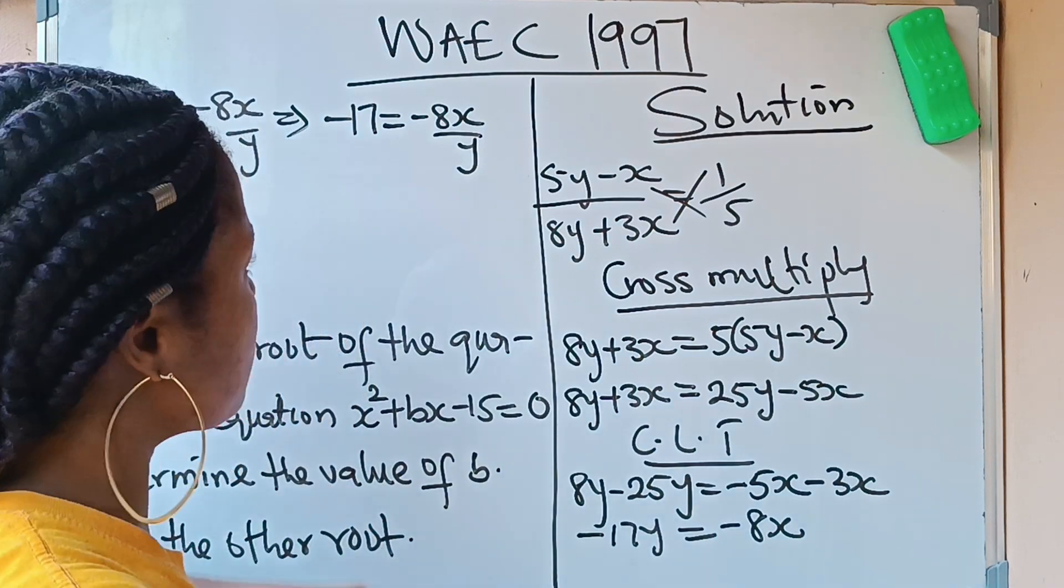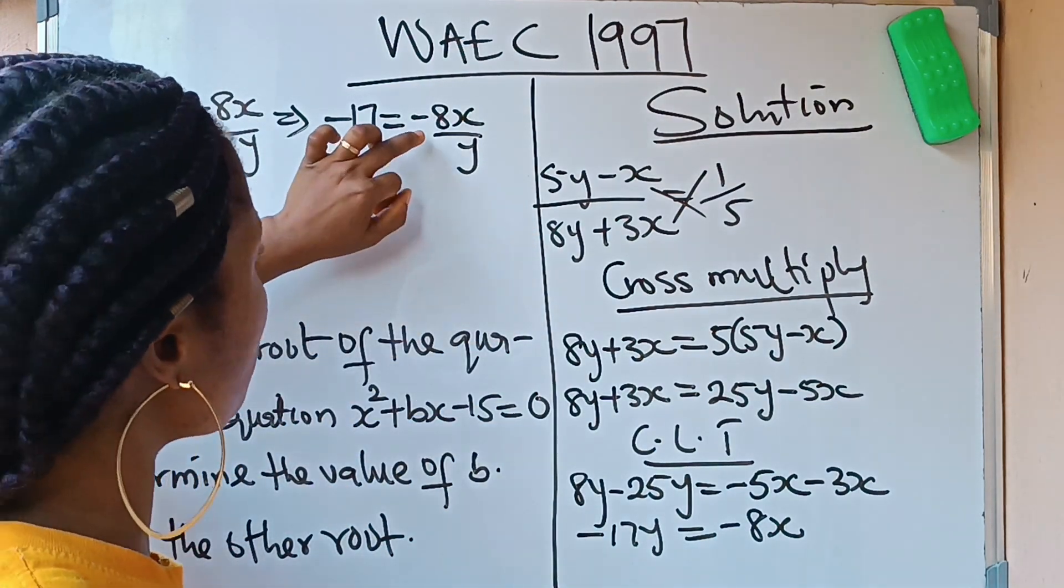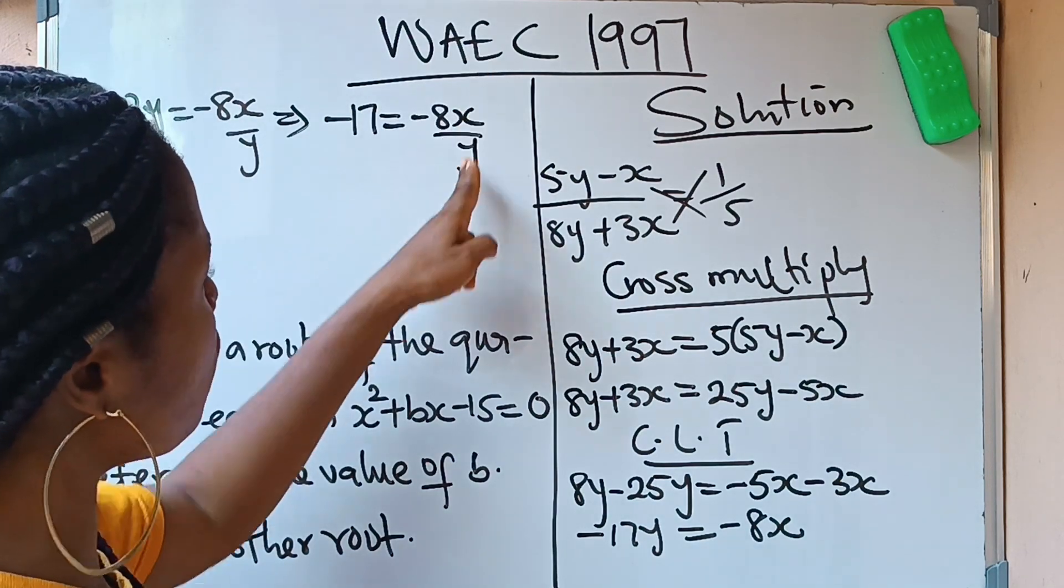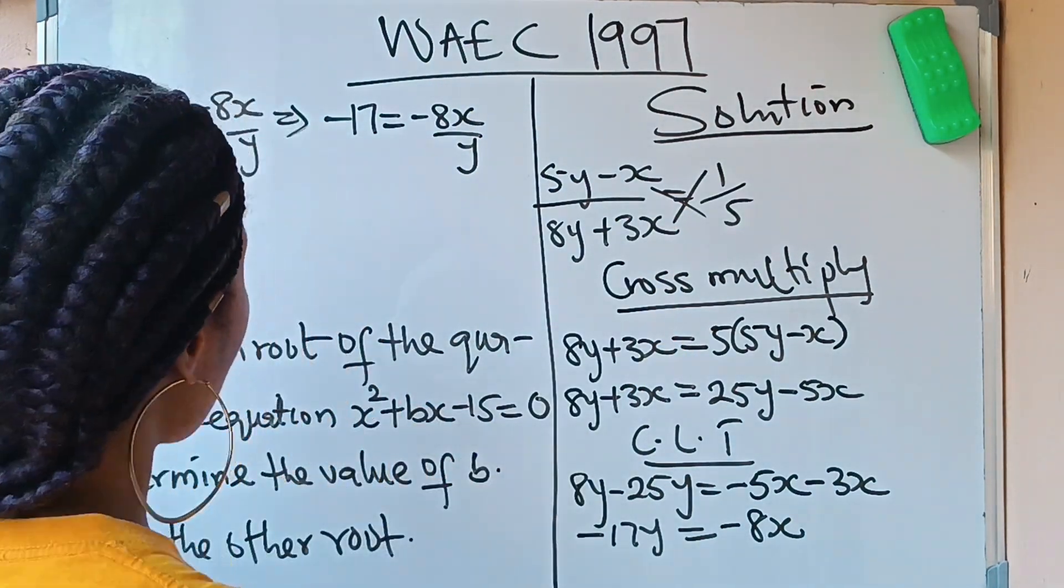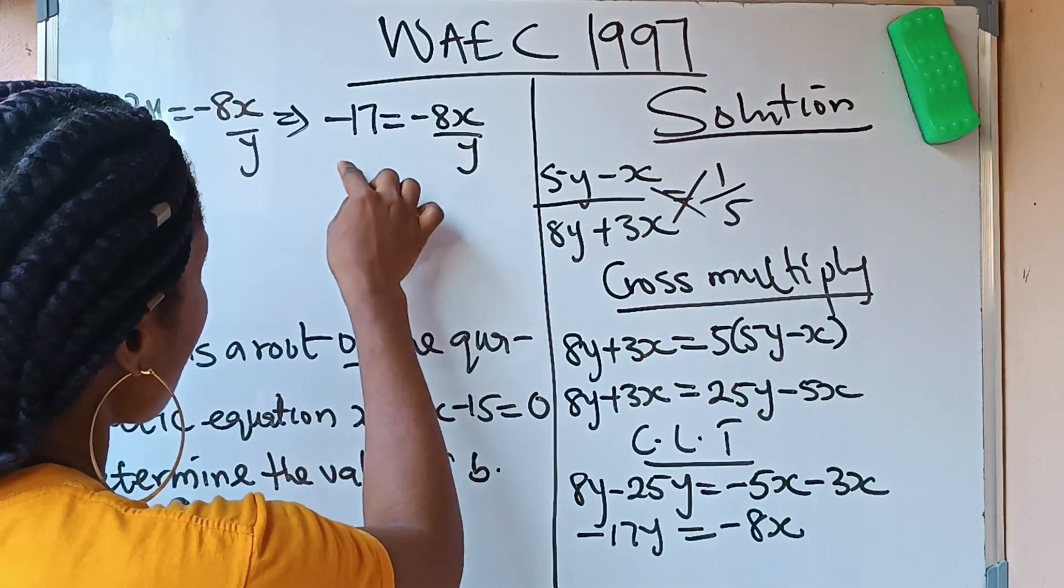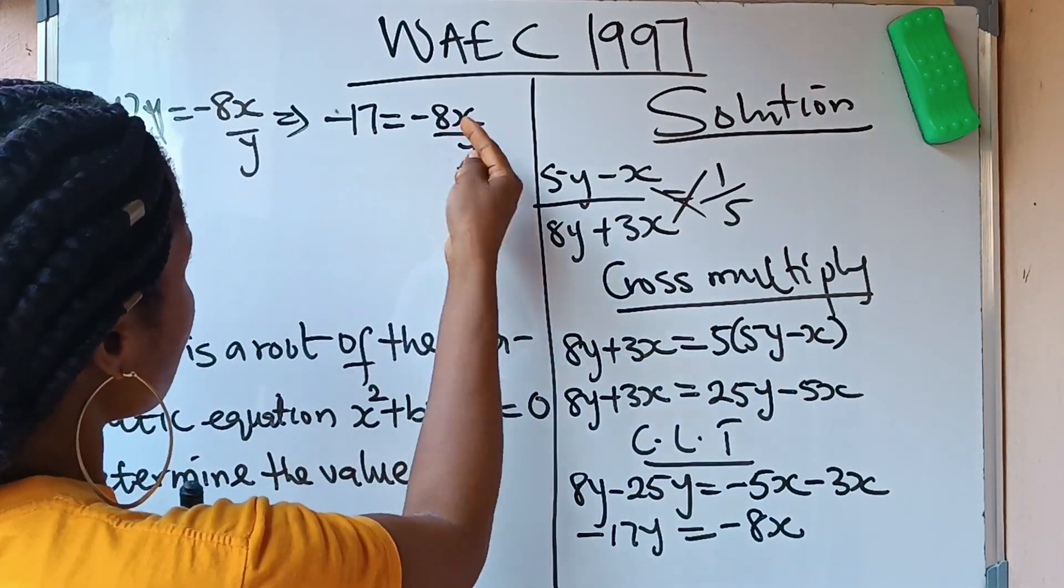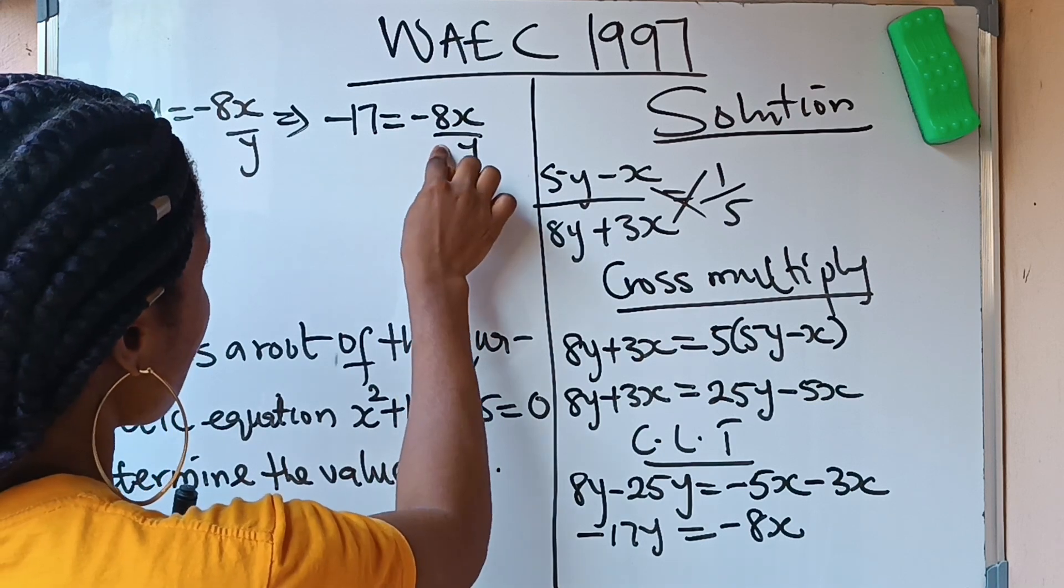So this is what we have here. Now we need to remove this -8 so that we have only x/y that is required from us. So how do we do that? That means we need to divide both sides by -8, because the only way we divide here by -8, that this -8 will divide this -8, and only x/y will remain.